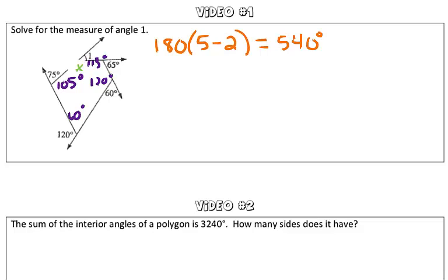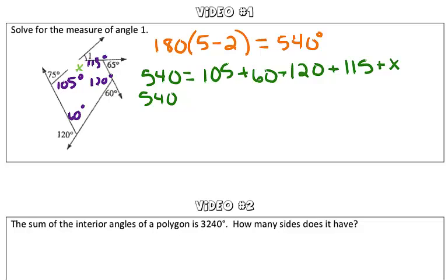The sum of the interior angles of any pentagon is 540 degrees. So to solve for x, we now have 540 is equal to the sum of the interior angles. So that is 105, 60, 120, 115, and x. We're going to combine our like terms. So 540 is equal to 400 plus x.